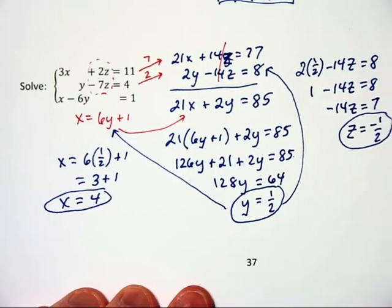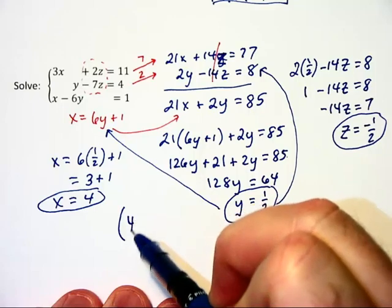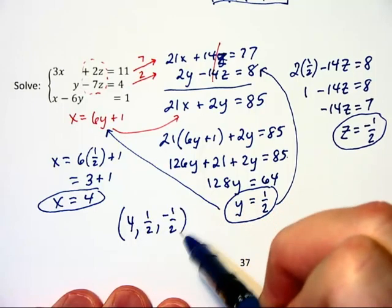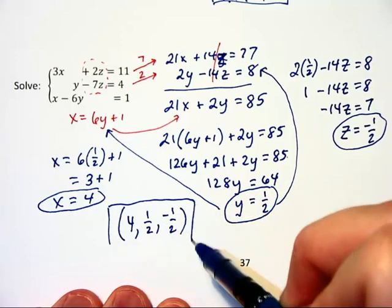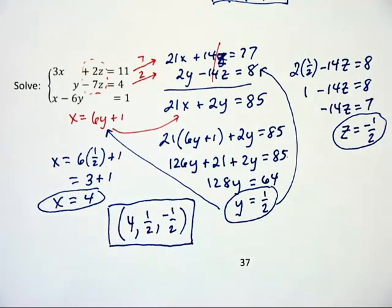And we can write this as a coordinate triple, x, y, z form, of 4, 1 half, negative 1 half, and that will check if you choose to substitute it into each of the three equations separately.